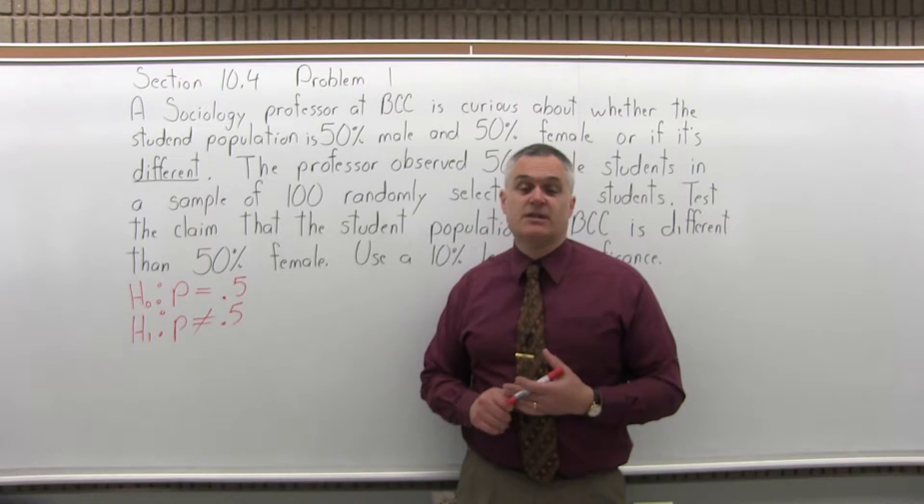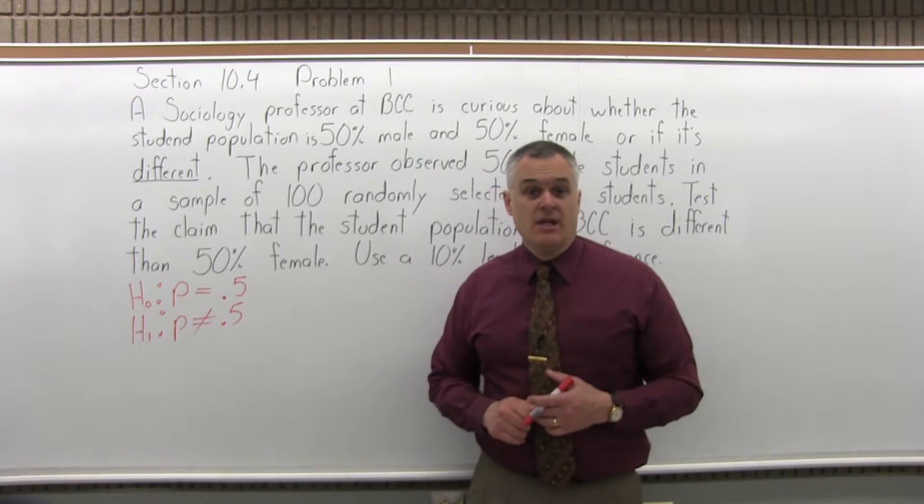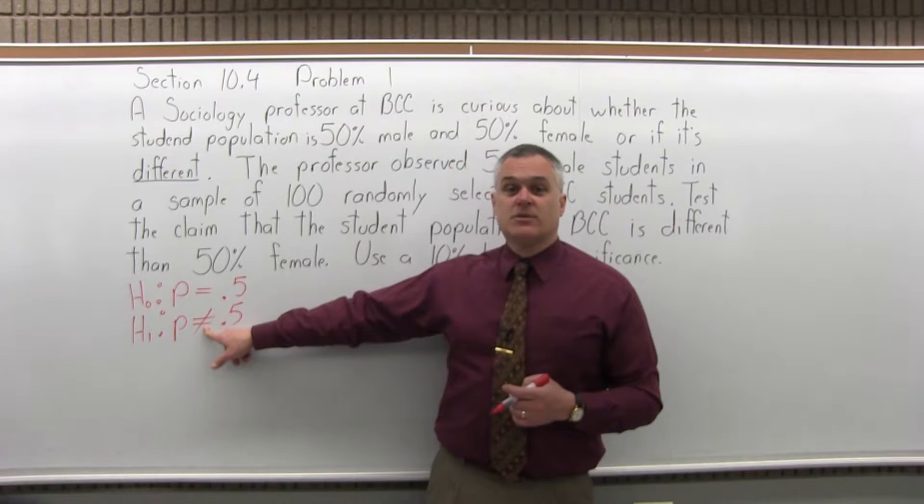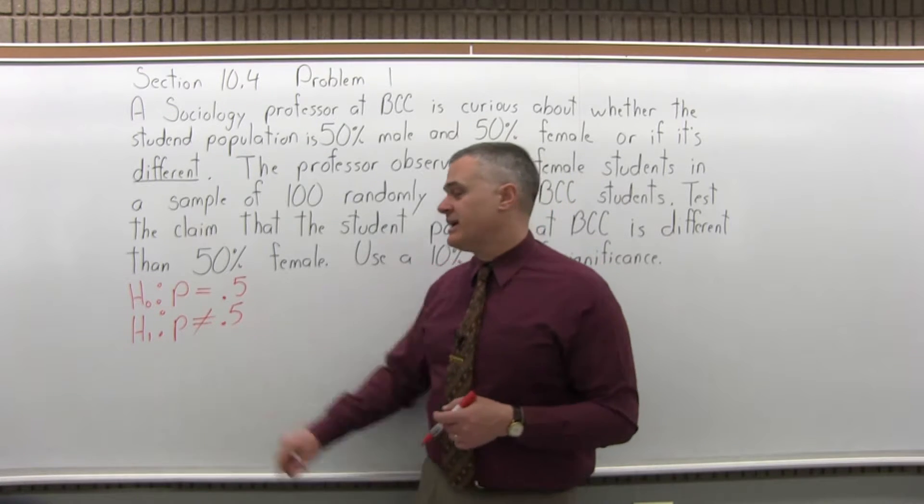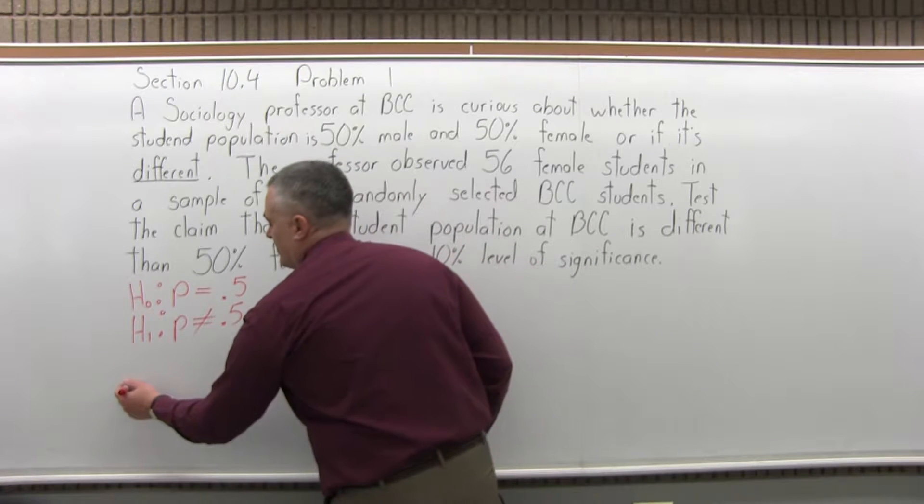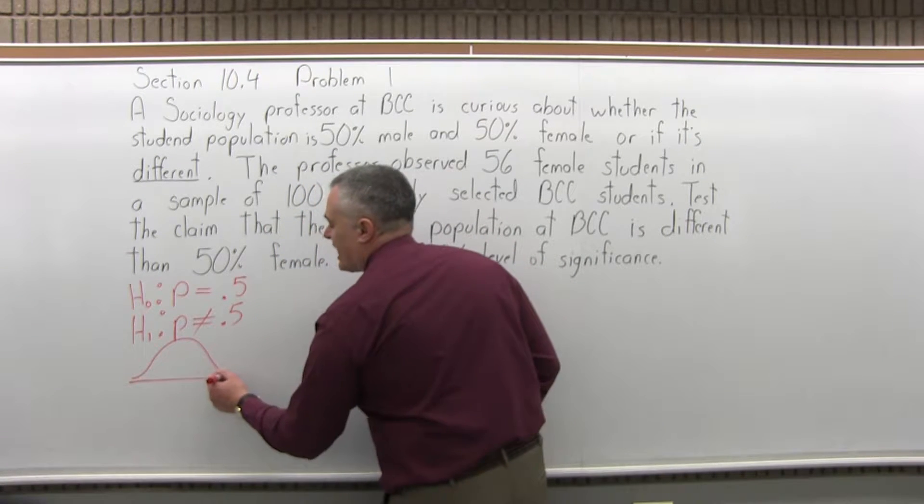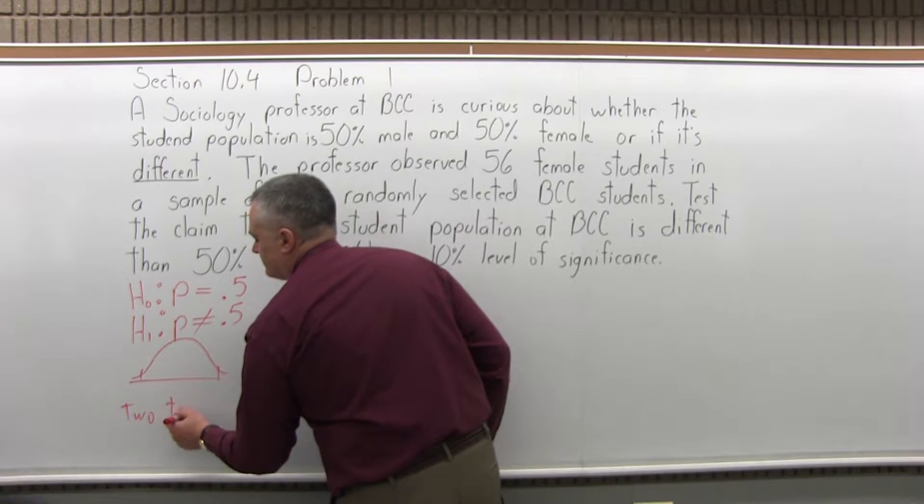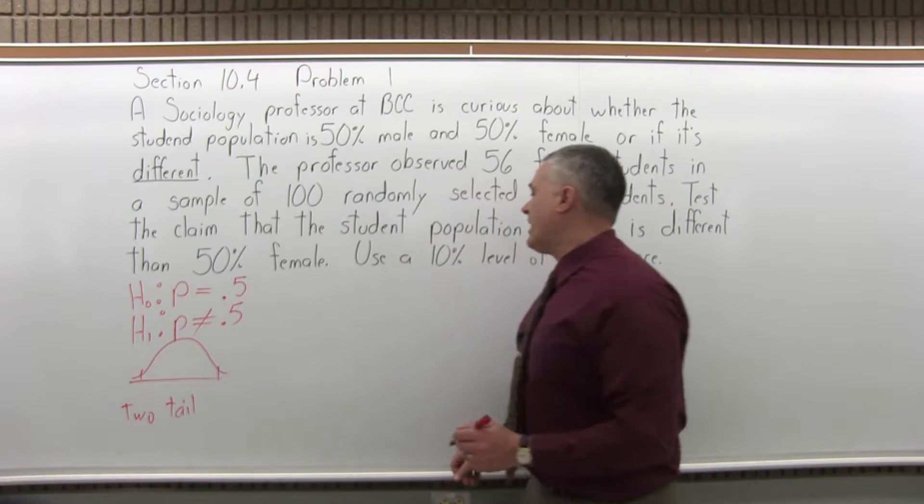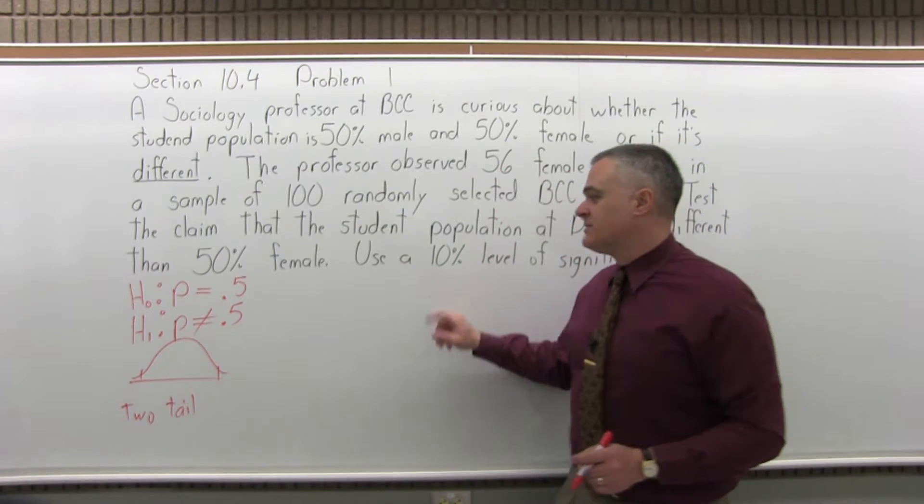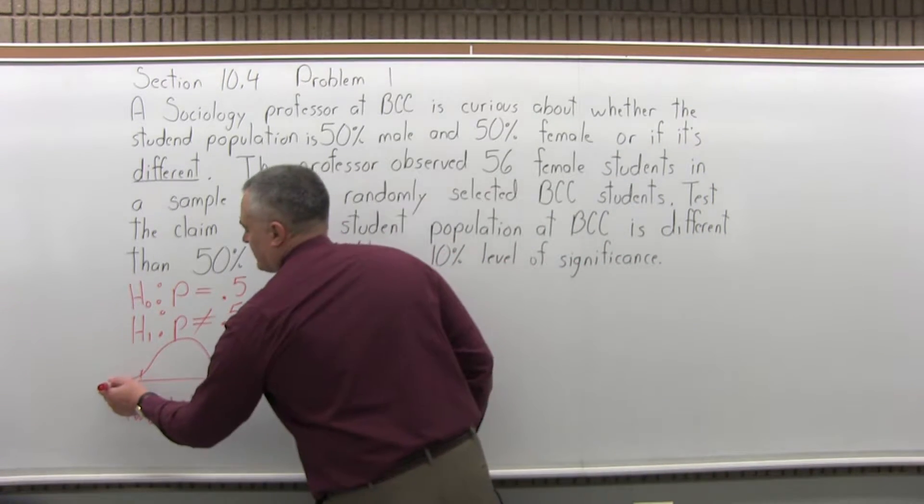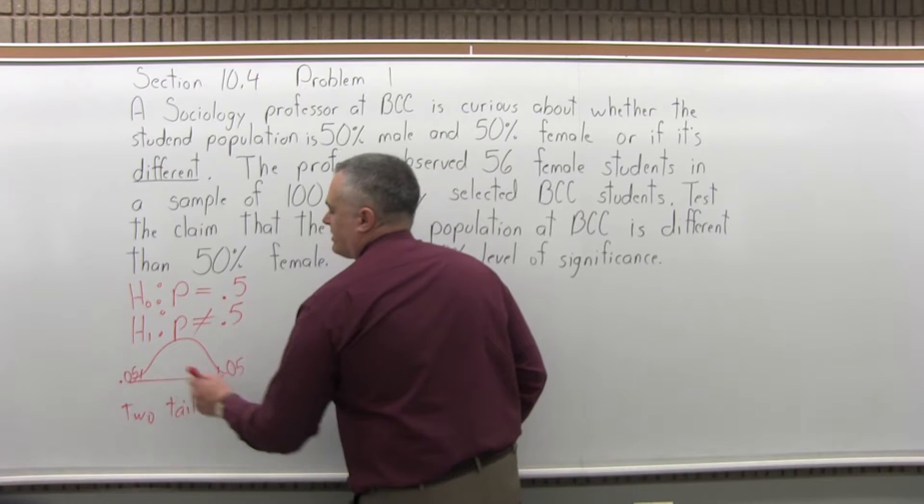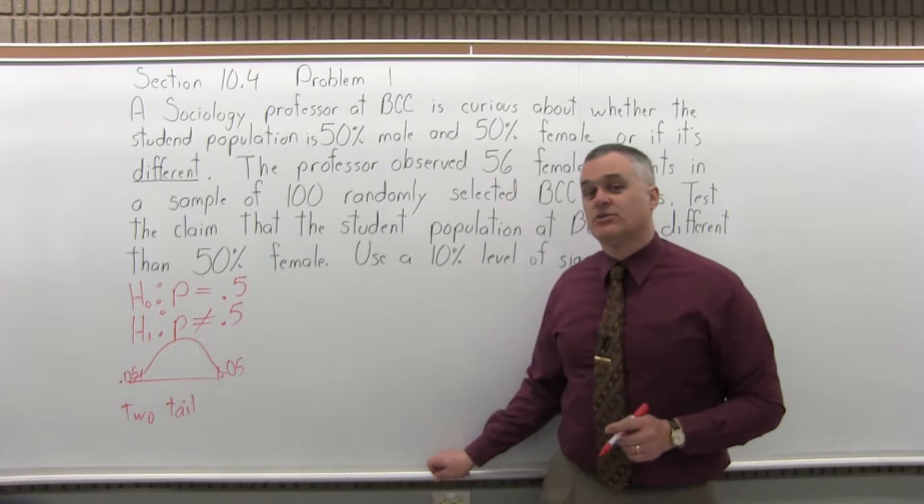Now, what type of test is this? Our options are left-tail test, right-tail test, or two-tail test. The way you tell is by looking at the alternate hypothesis. If you have a not equal to in your alternate hypothesis, it will always be a two-tail test. With a two-tail test, you have a critical region on each end of your graph. We are testing the claim at a 10% level of significance, so you split that 10% into 5% on the small end and 5% on the big end.